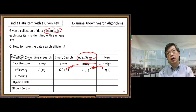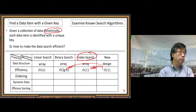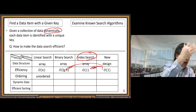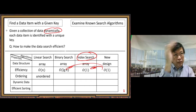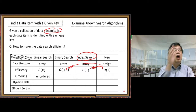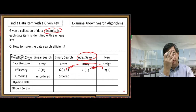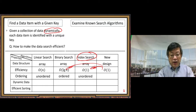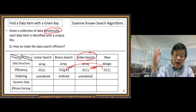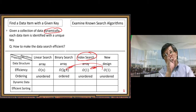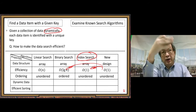That's a reasonable wish list — not too greedy. For ordering: linear search works on unordered data; binary search must be on ordered data, otherwise it doesn't work — a much stronger requirement. Index search works on unordered data. For our new algorithm, we also want it to work on unordered data, so we don't want that very strict requirement on data order.